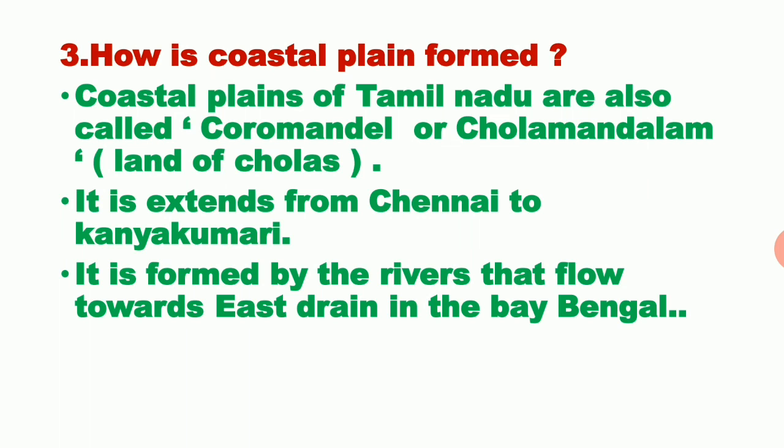The coastal plains of Tamil Nadu extend from Chennai to Kanyakumari, also called the Koramandal coast. They are formed by the rivers that flow towards the east and drain into the Bay of Bengal. Most south Indian rivers originate in the west and join the Bay of Bengal. In Tamil Nadu, rivers like Palaru, Tenpennai, Kaviri, and Vaihai flow eastward and form the coastal plains.